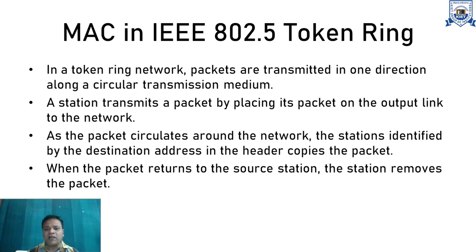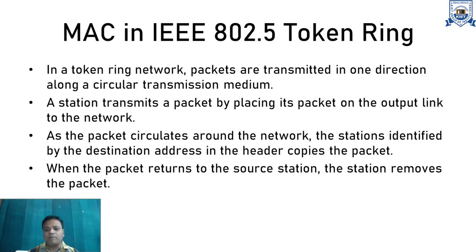In the token ring, a ring is formed among the various stations and a token circulates among them. If a station wants to send data, it grabs the token and can then transmit its packets. The destination station copies the packet when it identifies that the destination address is its own. When the packet returns to the source station, the source station removes that packet from the network.